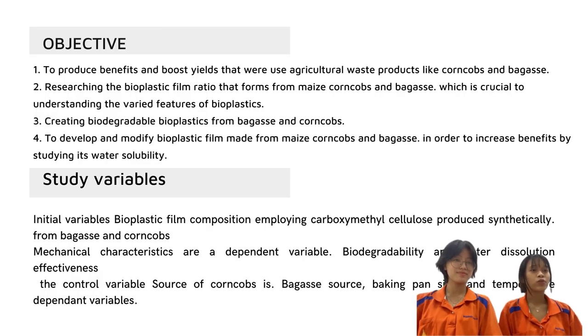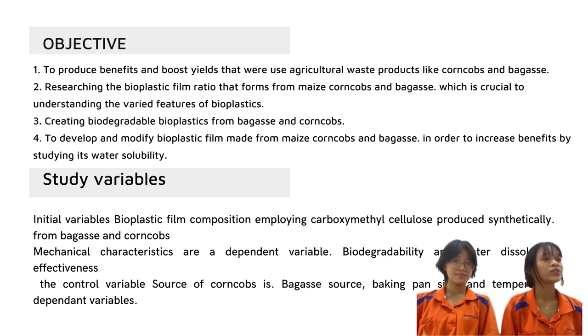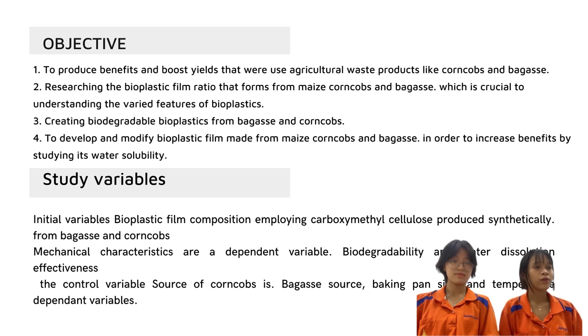Therefore, we are interested in water-soluble bioplastic film using carboxymethyl cellulose from corn cobs and bagasse, which are natural polymers that have advantages for the environment and are biodegradable. This also makes best use of agricultural waste and adds value to local crops. The objectives are: one, to produce benefits and boost yield through use of agricultural waste products like corn cobs and bagasse; two, to research the bioplastics film ratio that forms from corn cobs and bagasse, which is crucial to understanding the future of bioplastics.